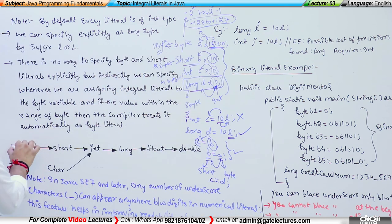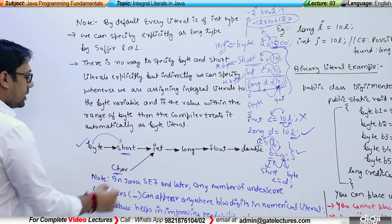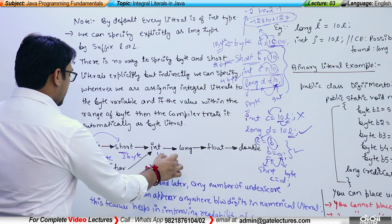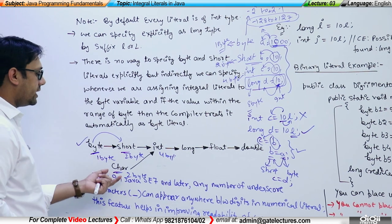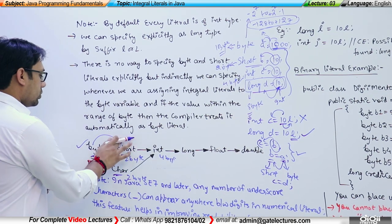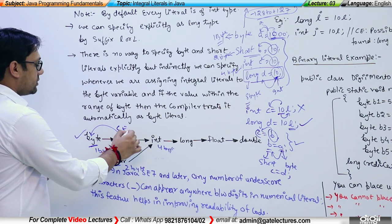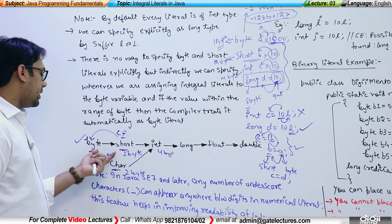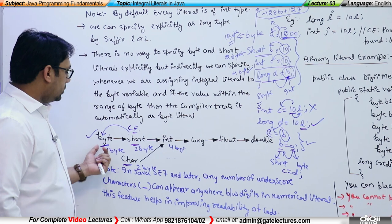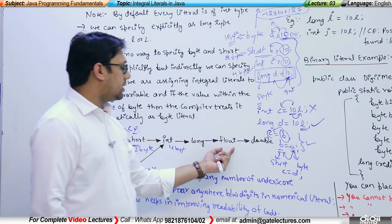There is a hierarchy table: you can store a byte number in a short variable, a short number in an integer variable. You can also store a character in an integer variable because character is 2 bytes and integer is 4 bytes. You can store smaller data types into integer without any errors. But if you try to store a short into a byte variable, there will be a compile-time error saying 'possible loss of precision: required byte, but found short'. The hierarchy is: byte → short → integer → long → float → double.